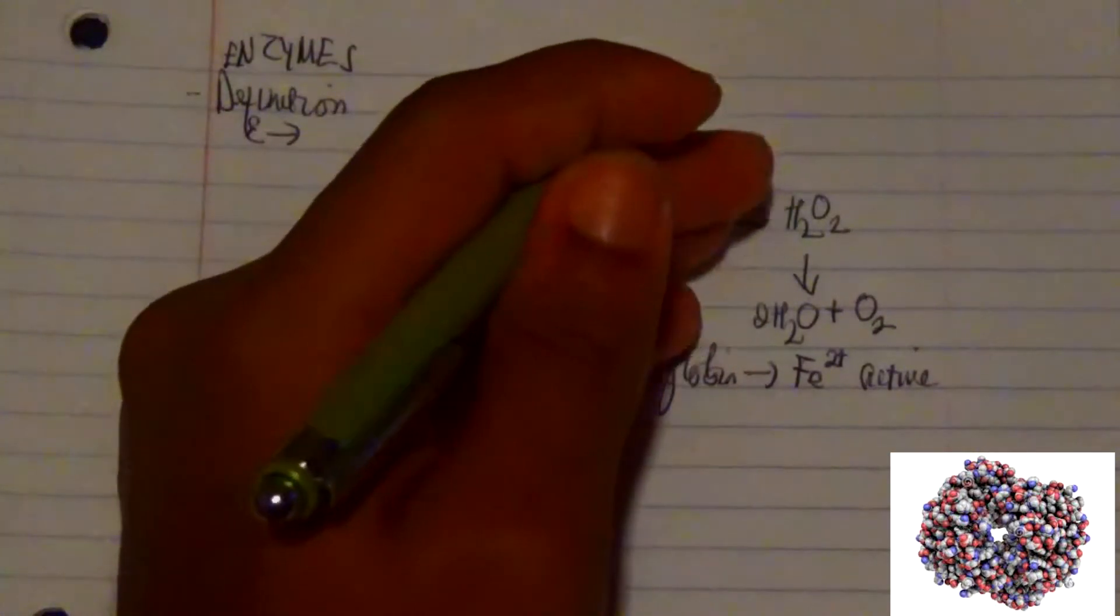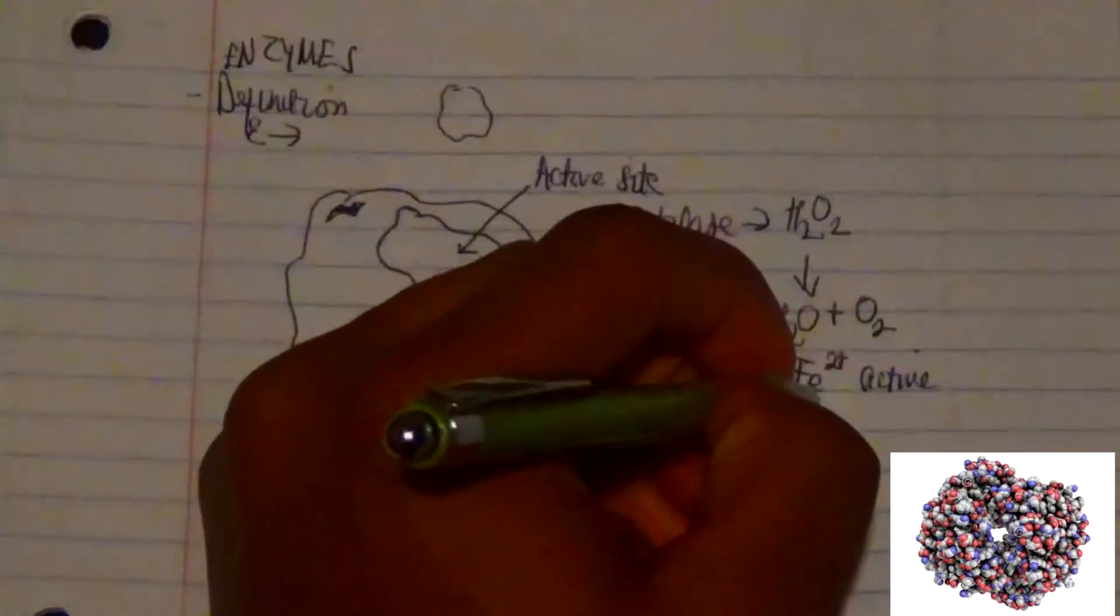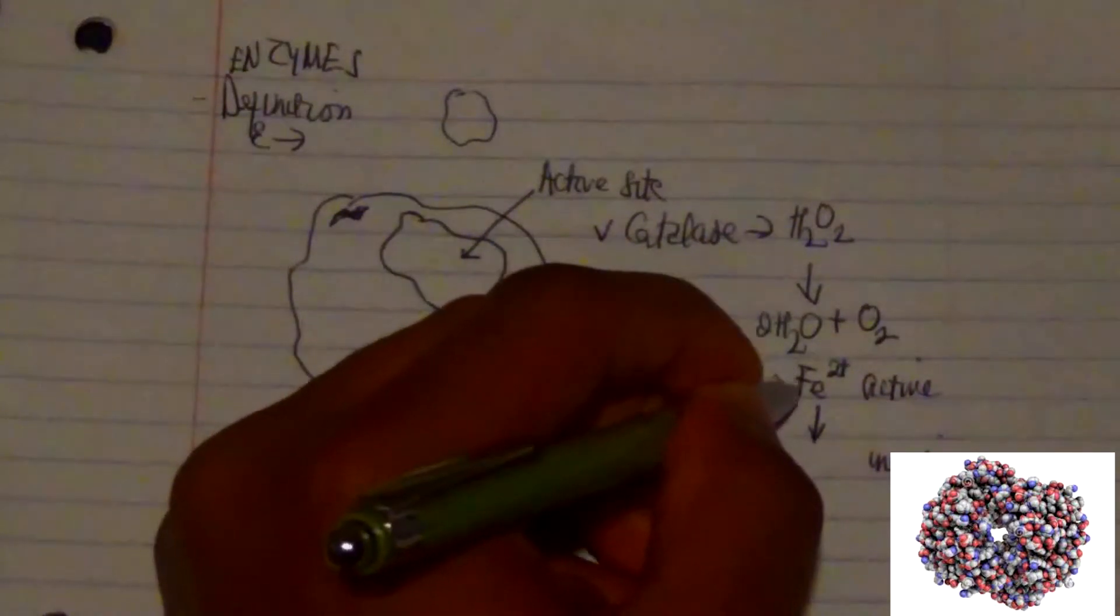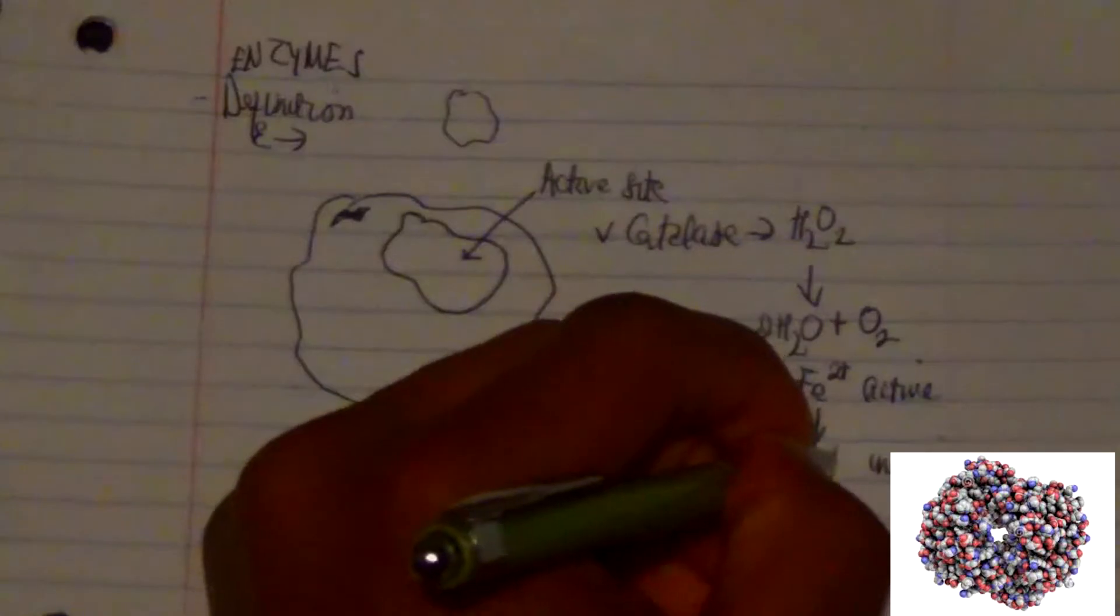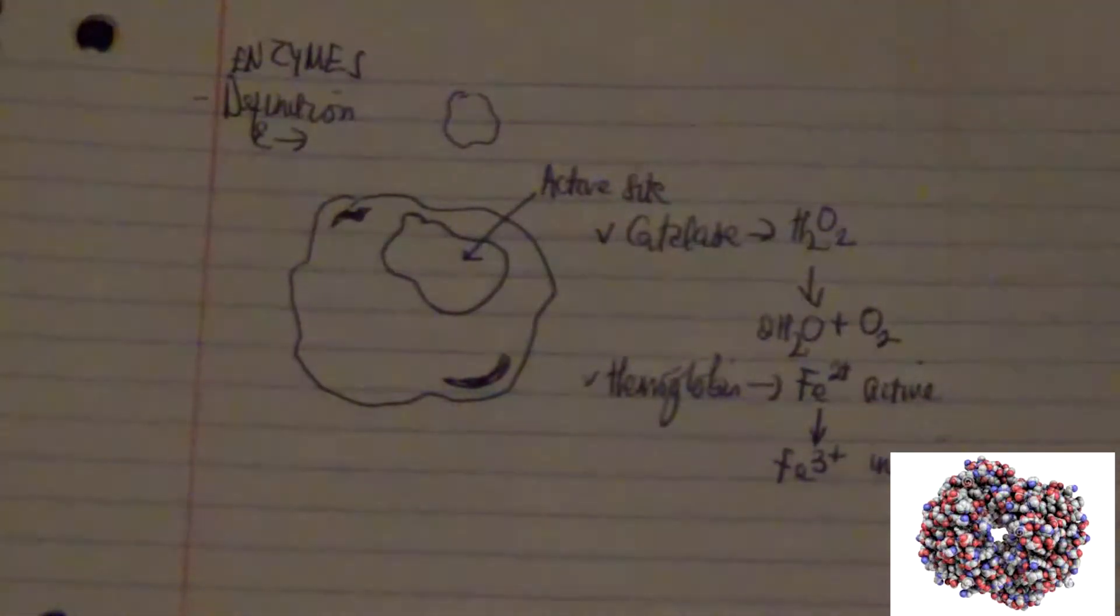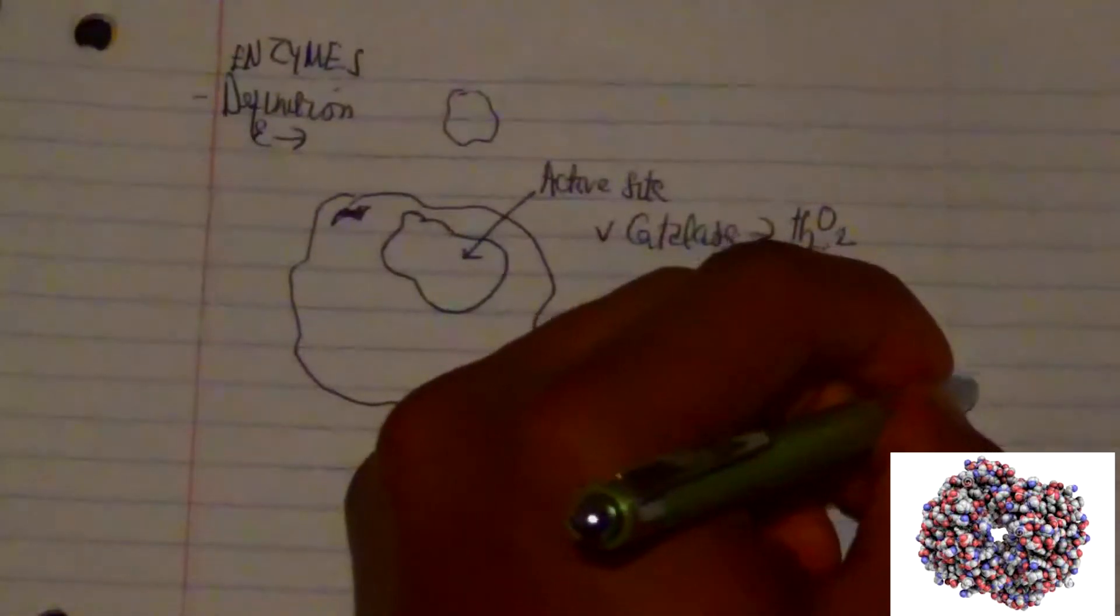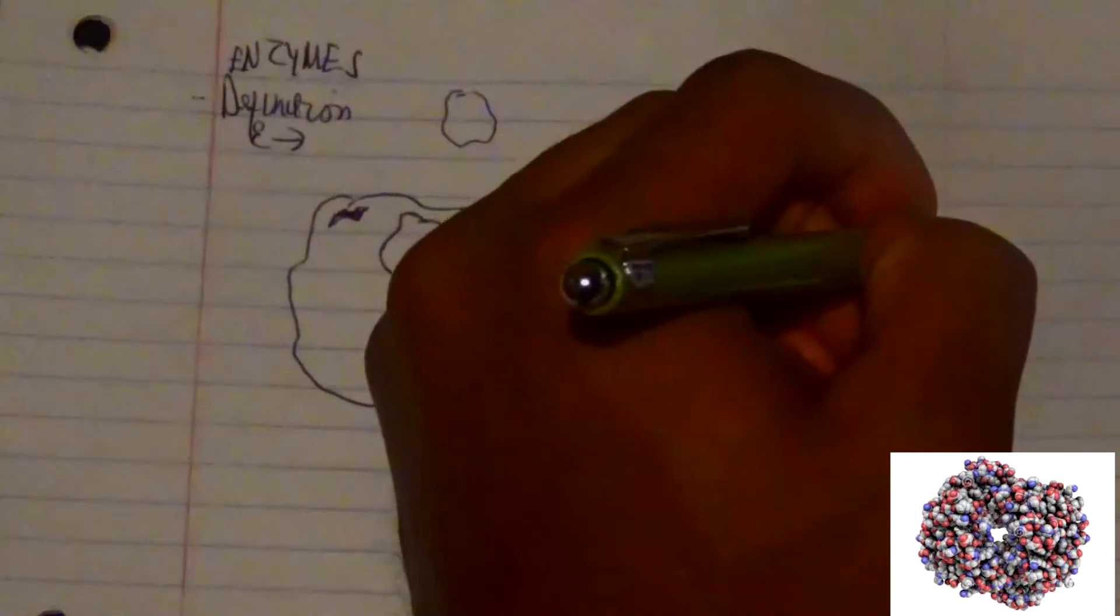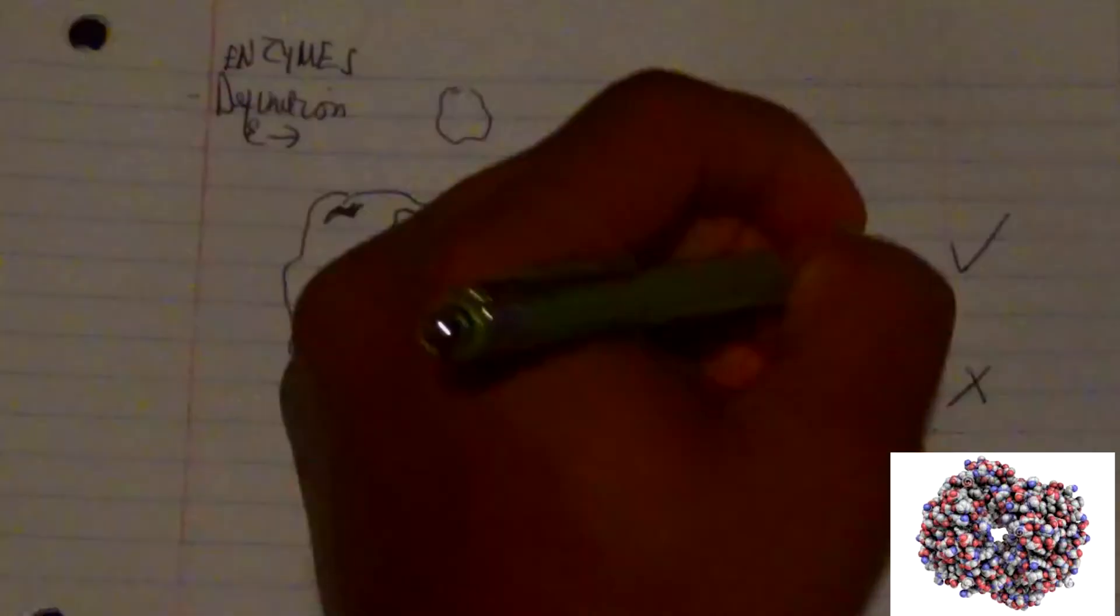However, once it exhibits this change in particular configuration, it actually becomes inactive as it changes its oxidation state from Fe2+ to Fe3+. This makes us conclude that hemoglobin is not actually a good protein catalyst. However, catalase is a really good catalyst because it remains unchanged in this particular process.